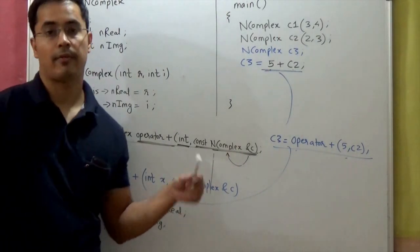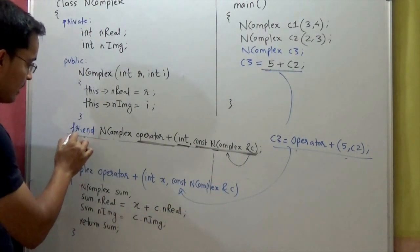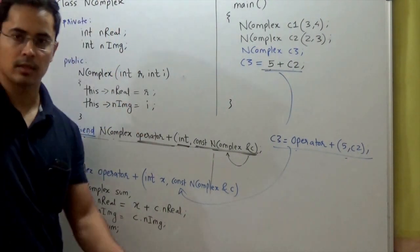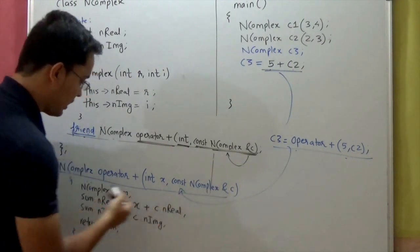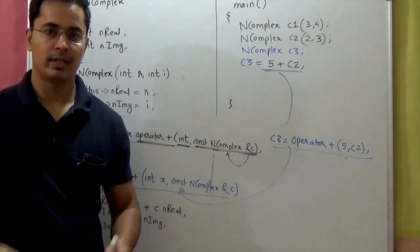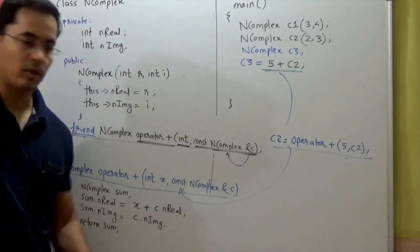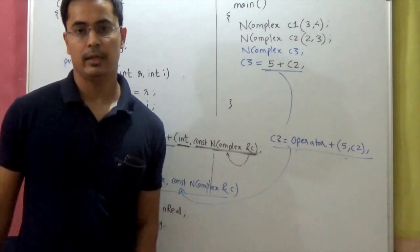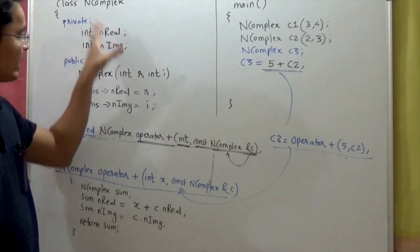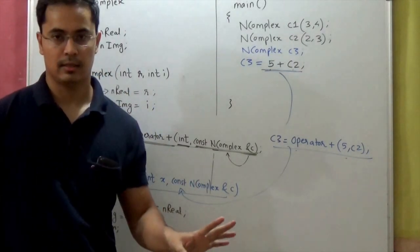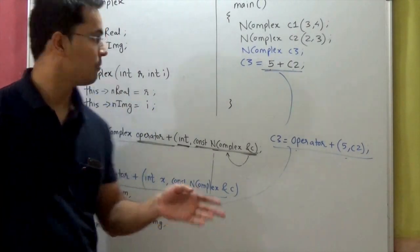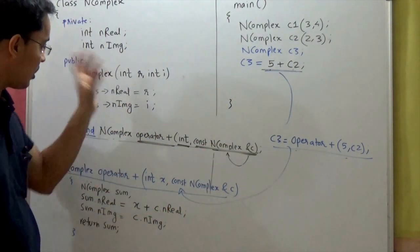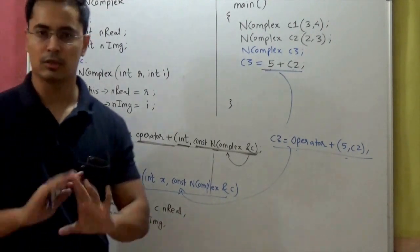This is how you use a friend function — declare it as friend inside your class in either the public or private section, and define it outside as a global function. Its scope is not limited to the class. A friend function can access all data members and all member functions of your class — private, public, or protected — with no restrictions.